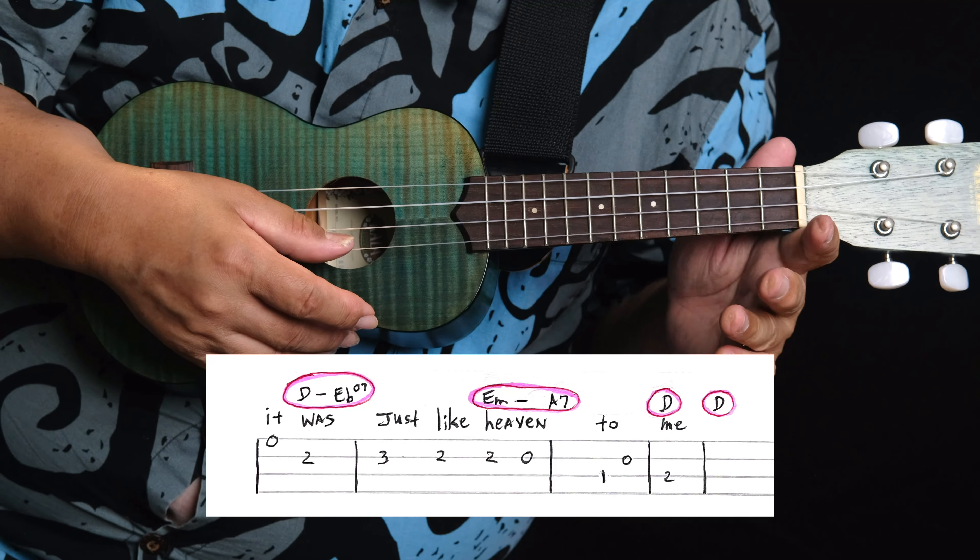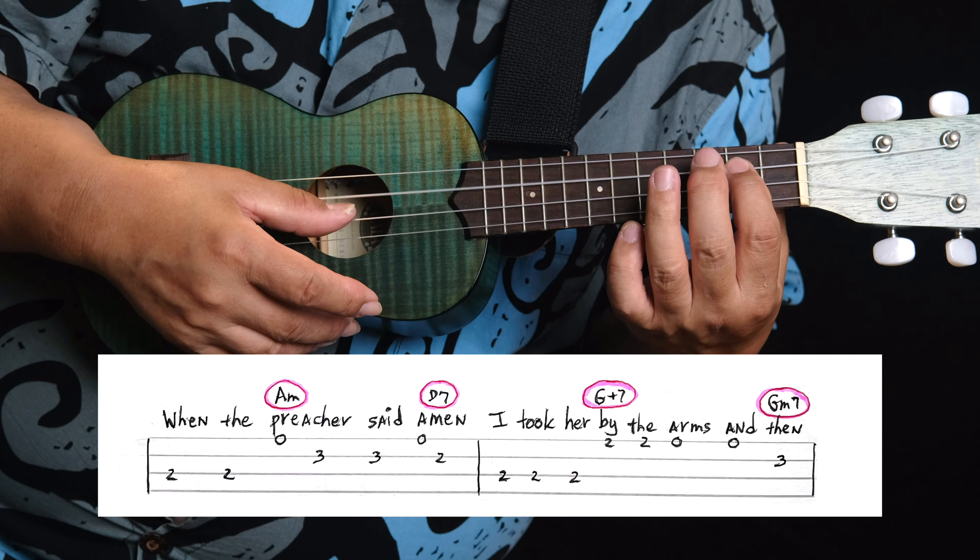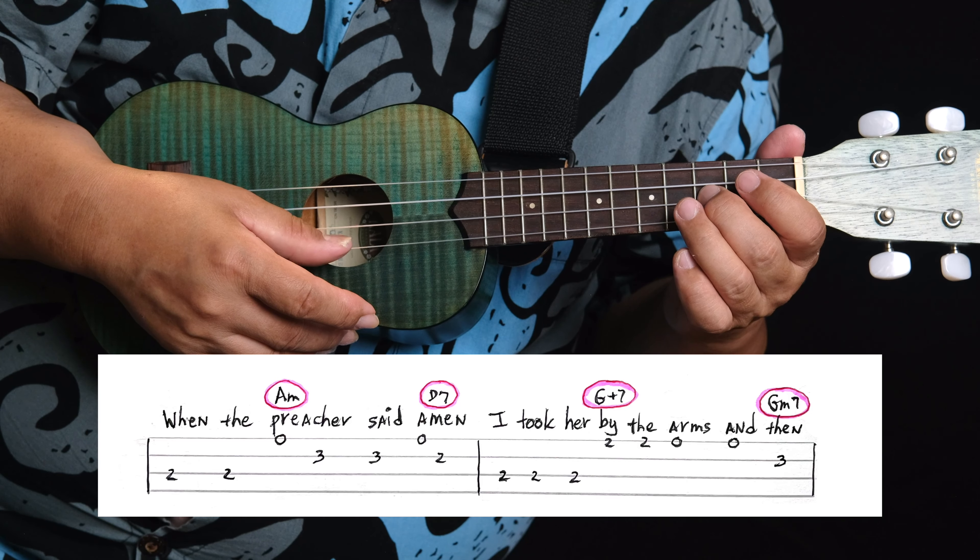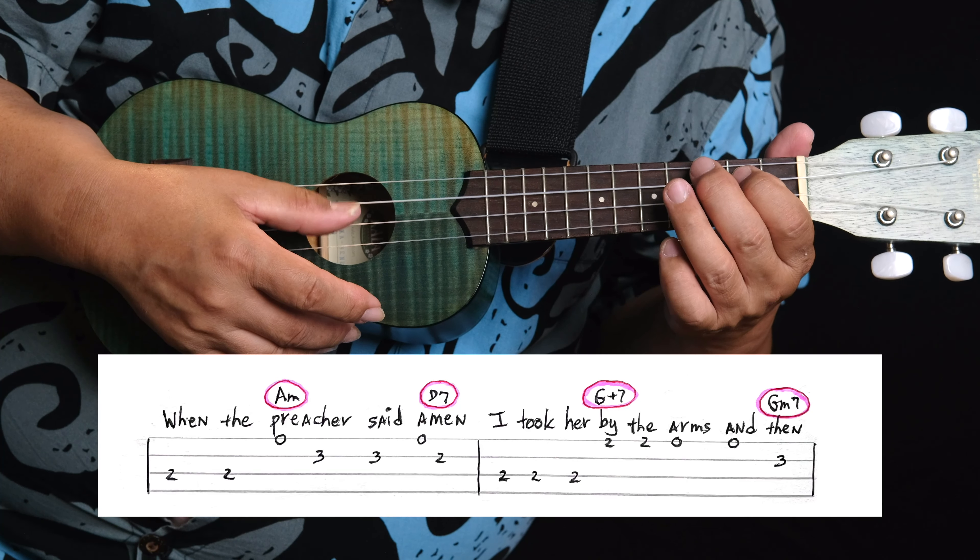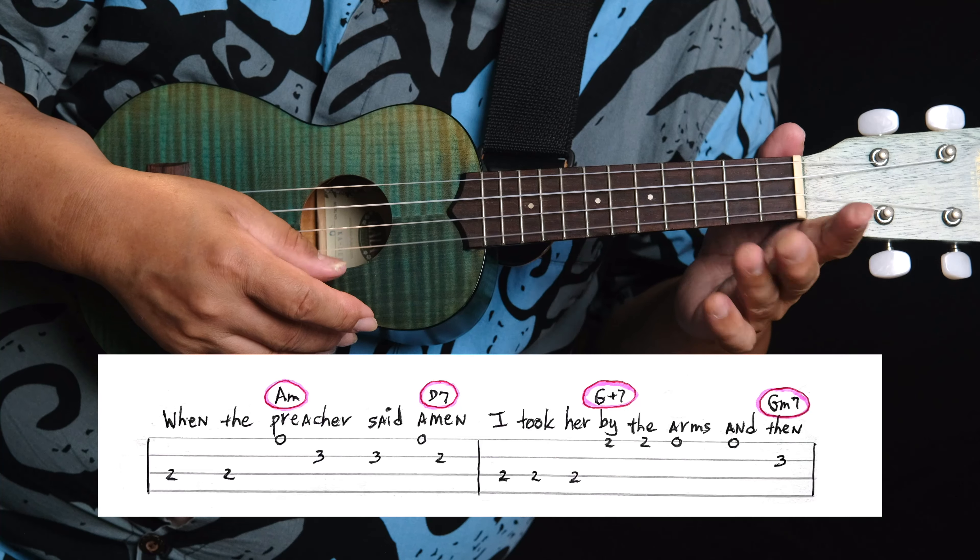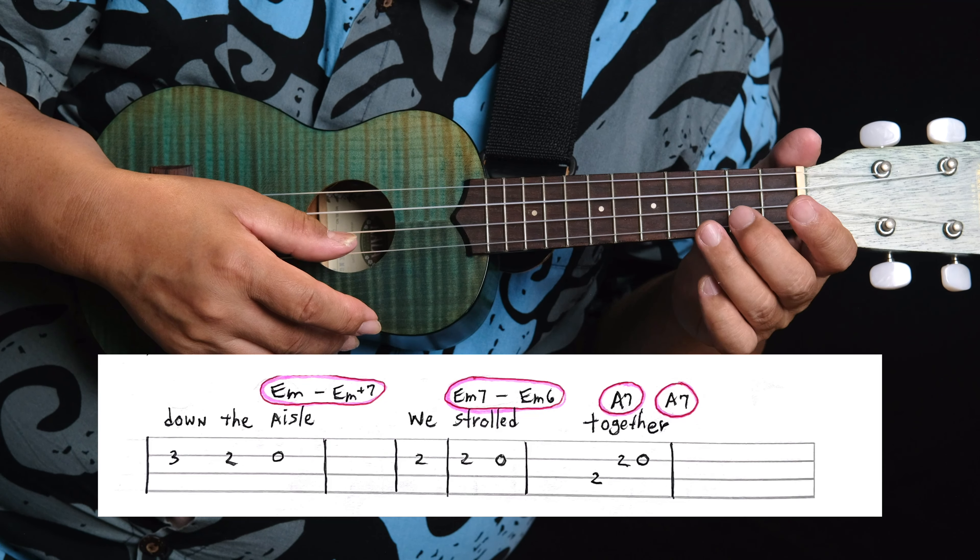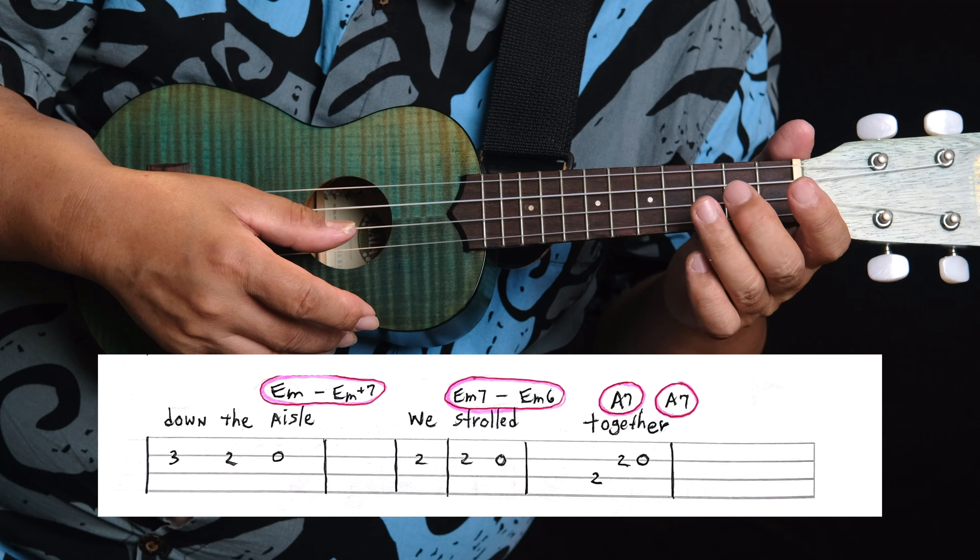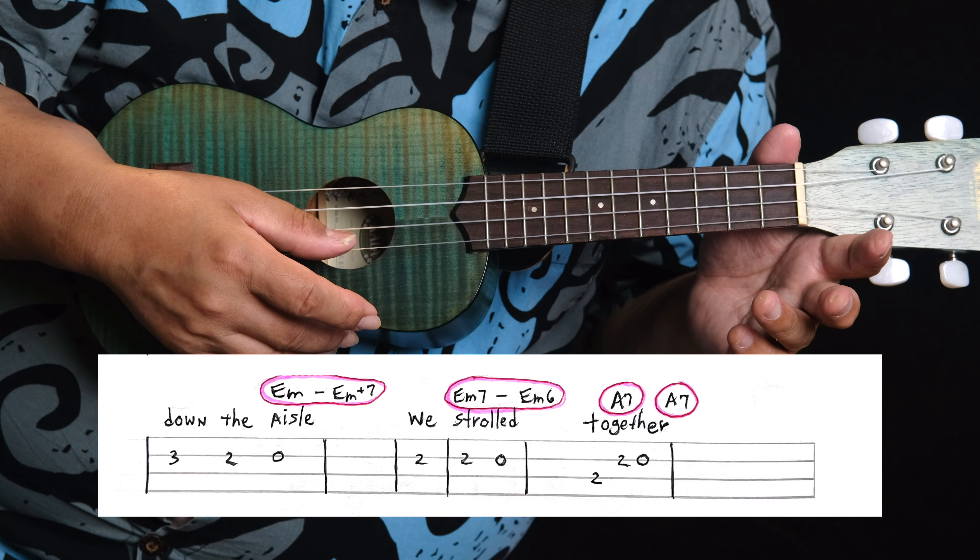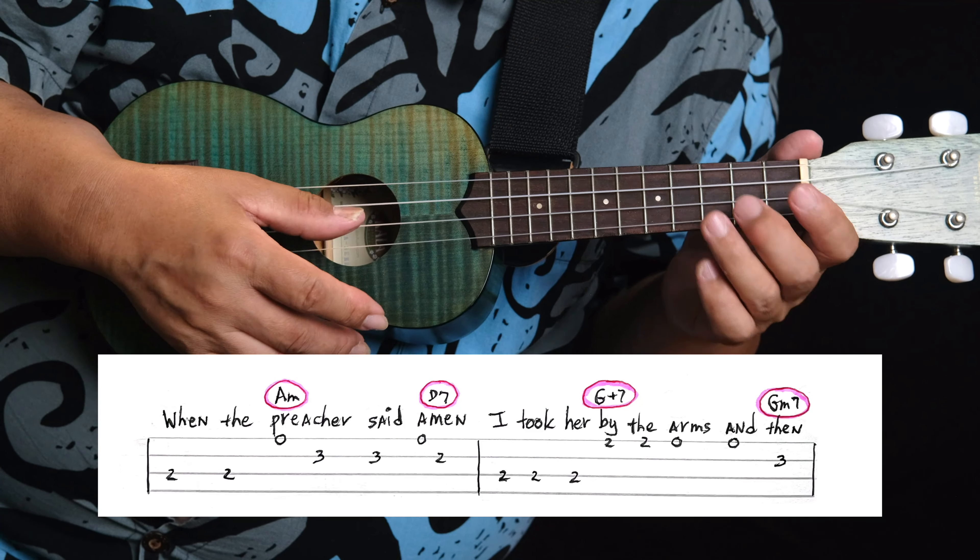Okay, here comes the next line. When the preacher said amen, I took her by the arms, and then down the aisle we strolled together. Here's the same part with the chords.